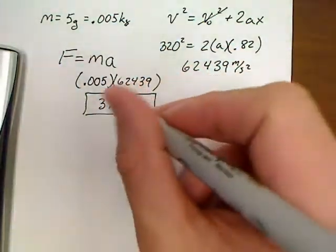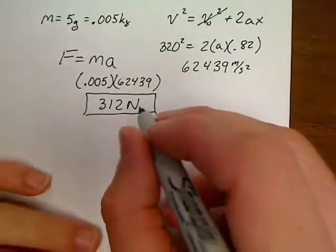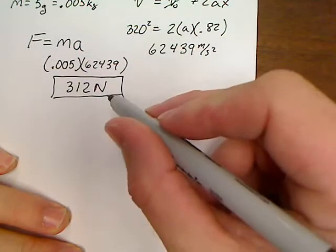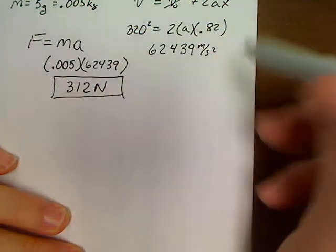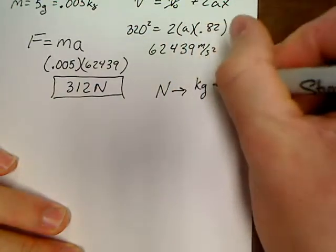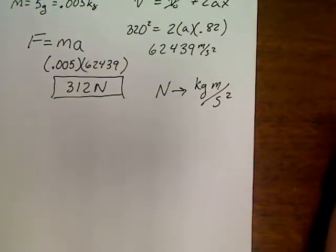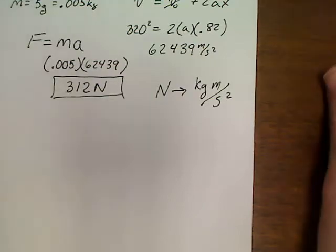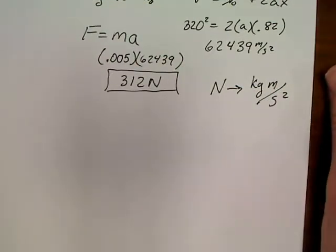The unit of force is the newton, which is a kilogram meter per second squared. In terms of dimensional analysis, that will come in handy later, so make sure you know that. Now let's do example B.